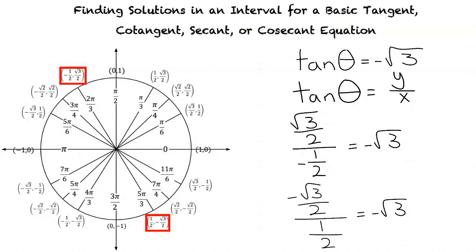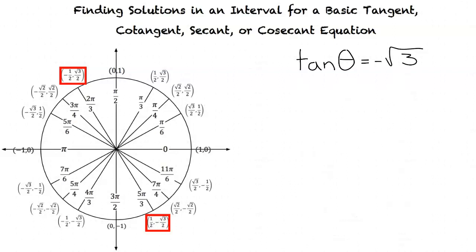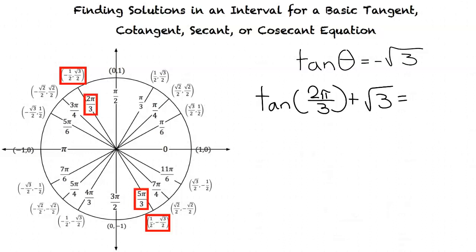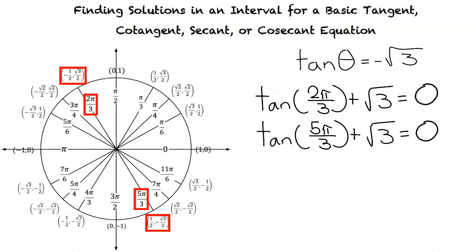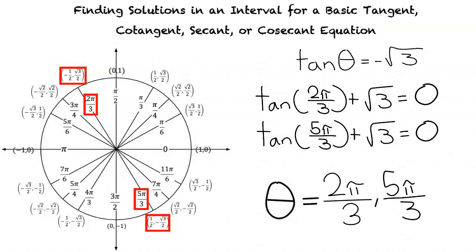Now that we have identified our coordinate points, we look at the corresponding radian terms. Our corresponding radian terms are 2π/3 and 5π/3. This means that if we substitute 2π/3 or 5π/3 for theta in our original problem, our result will be 0. Thus, our final answer is theta equals 2π/3 and 5π/3.